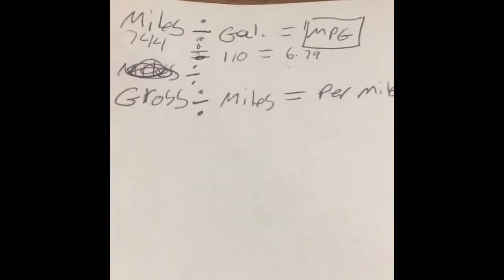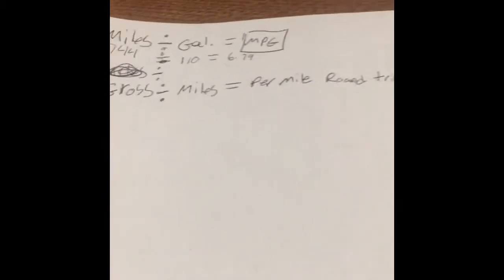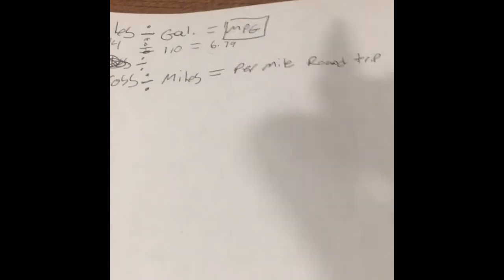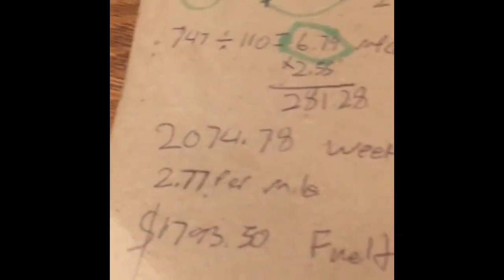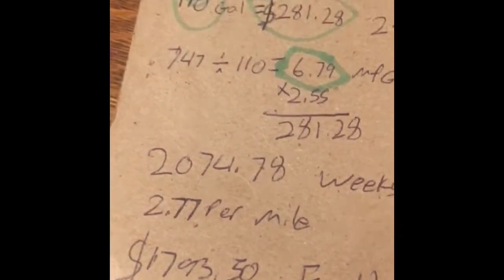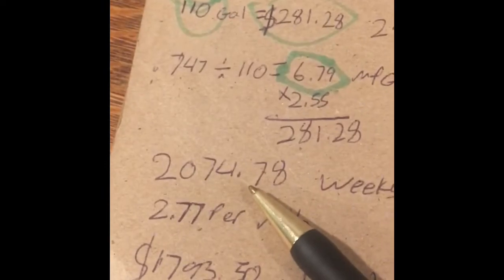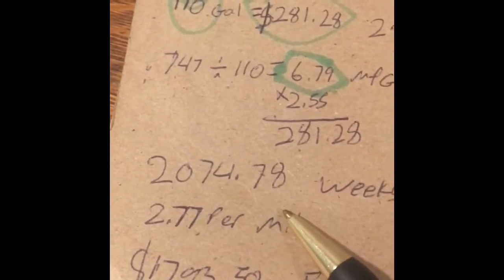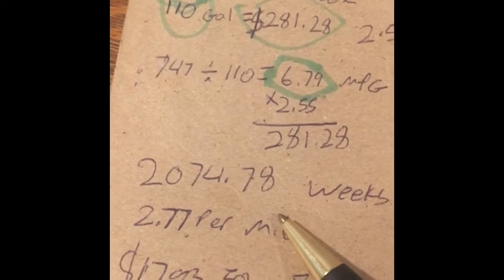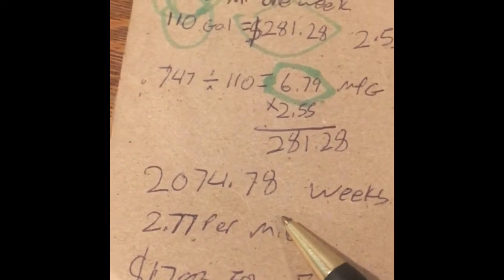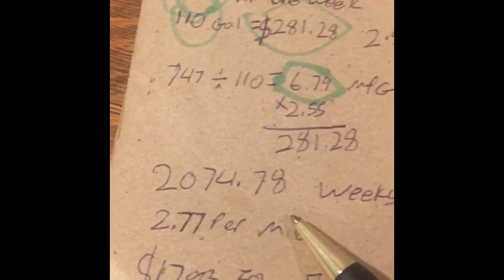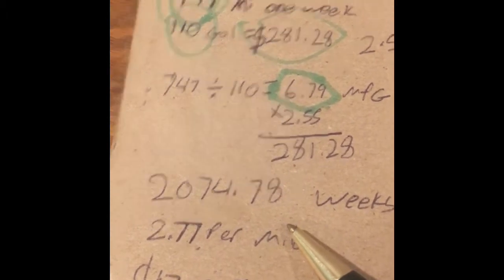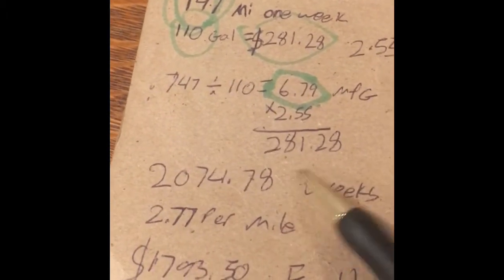Okay, so then to do the per mile you need to have gross. What I grossed for the week was $2,074.78, and that's like I said, so it was more if you want to include the 20% that I never see ever, so I didn't put that in there.